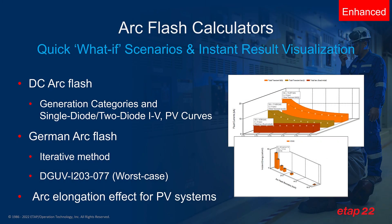We have also improved our Arc Flash calculators, including instant result visualization. The DC Arc Flash calculator includes generation categories and the behavior of single and double diode IV and PV curves for solar panels. And the German Arc Flash calculator also has improvements in its iterative method as well as the worst case method.